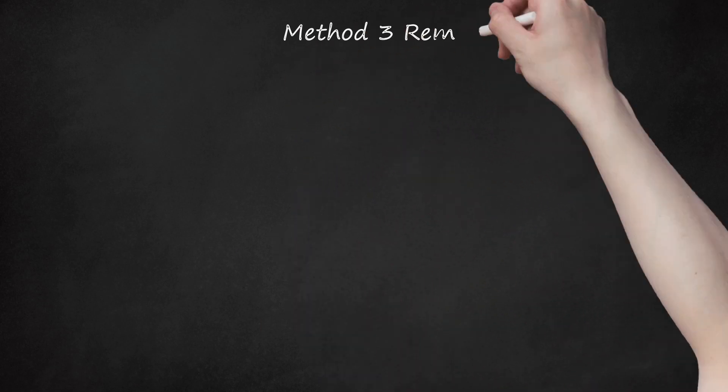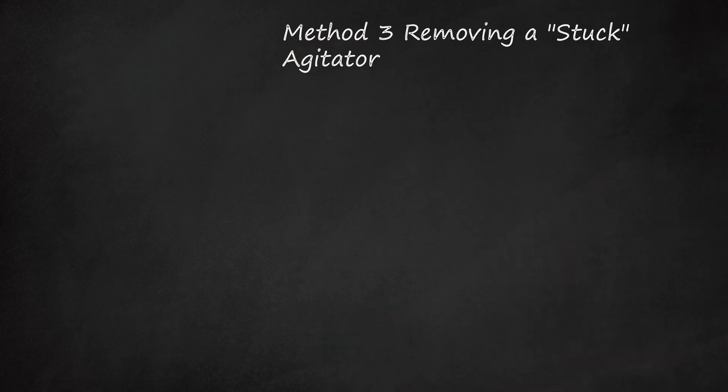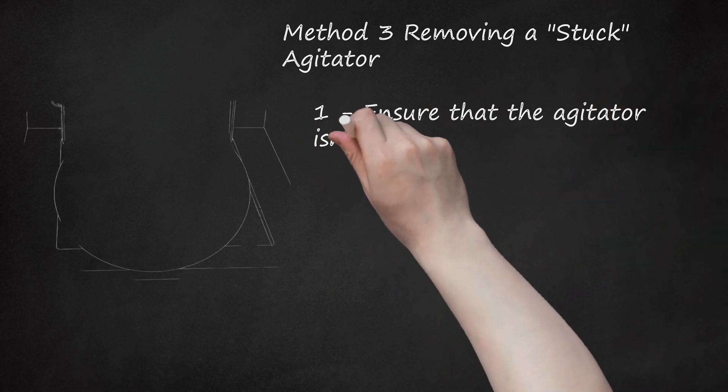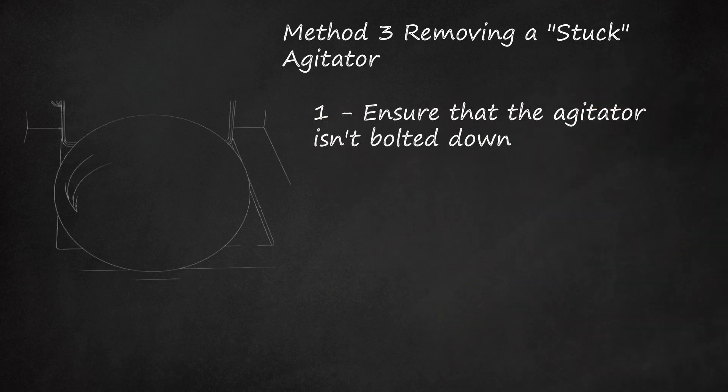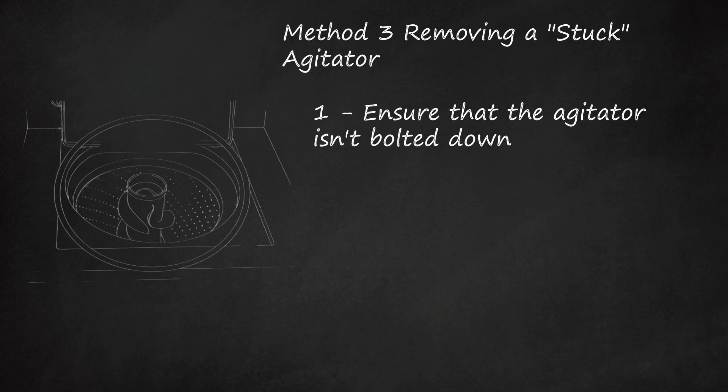Method 3: Removing a Stuck Agitator. Step 1: Ensure that the agitator isn't bolted down. Over many years of use, water, soap, and other washing chemicals can sometimes harden around the base of the agitator, essentially freezing it in place and making it very tricky to remove, if not impossible. Luckily, in this case, it's often still possible to remove the agitator by using a sturdy 2x4 plank as a simple lever.